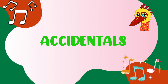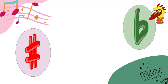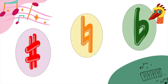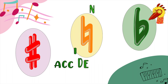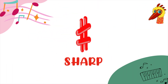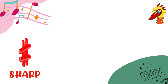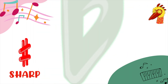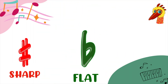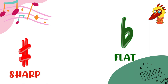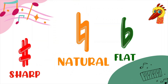Yes Ruby, accidentals! Ever notice these three symbols when you read music? These are called accidentals. First off we have a sharp — oh, it looks like a hashtag! Yes it does, but slightly different. Next we have a flat, and this is how it looks. Does it remind you of any alphabet Ruby? Small letter B! Precisely. And lastly we have a natural, which looks like this.